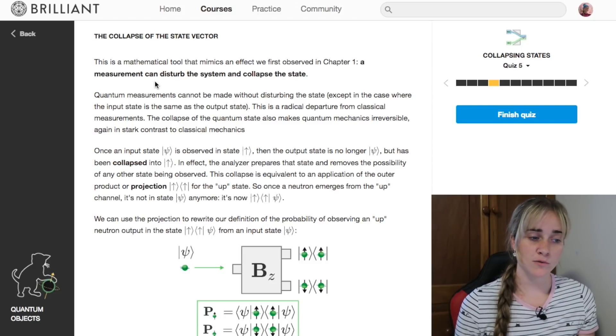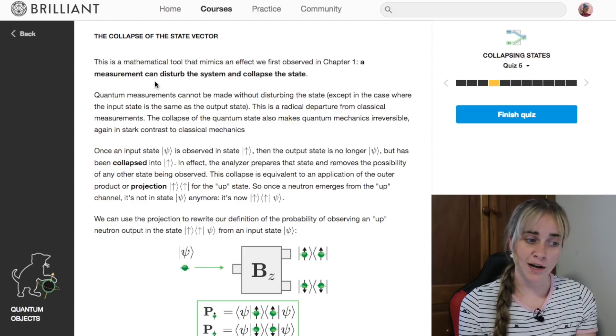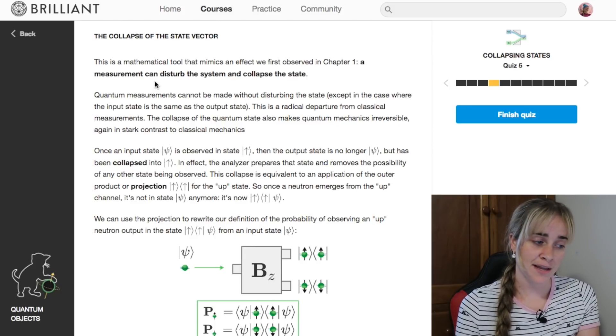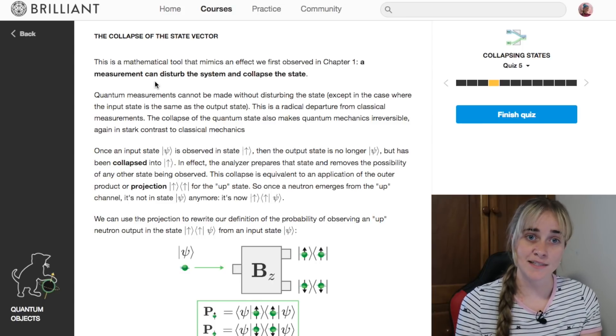It's a mathematical tool that mimics the effect we first observed in chapter one, and that is that a measurement can disturb the system and collapse the state.